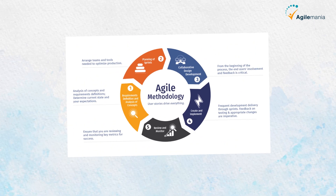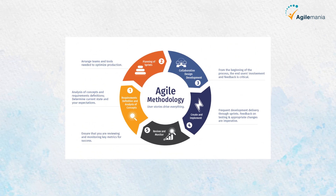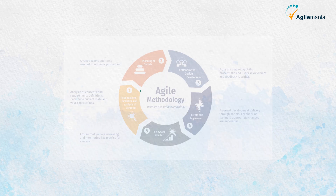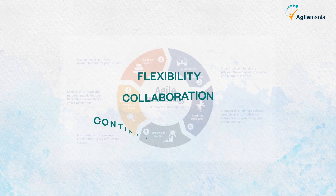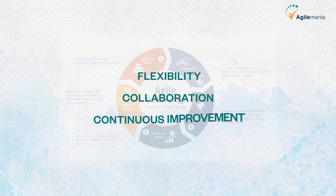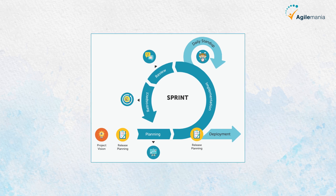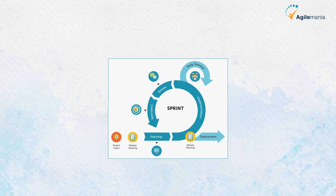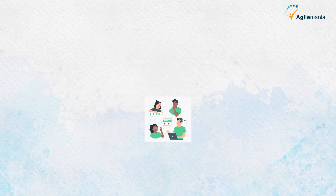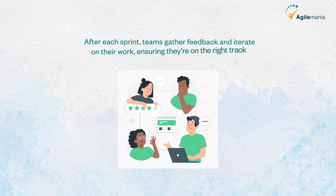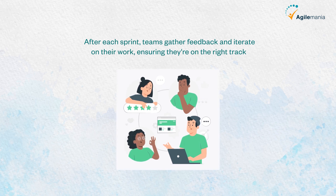Just a quick recap. Agile methodologies are all about flexibility, collaboration, and continuous improvement. They break down projects into smaller, manageable chunks called sprints. After each sprint, teams gather feedback and iterate on their work, ensuring they're on the right track.